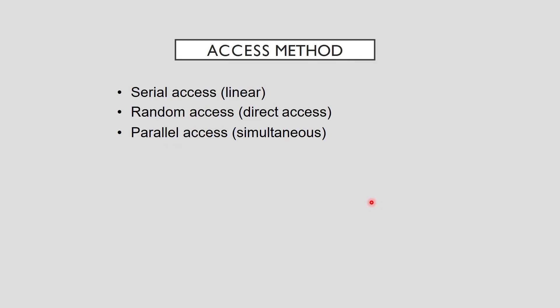The access method refers to the physical structure of the storage device's read or write mechanism and storage medium, which determines the ways in which data can be accessed. There are three broad classes of access: serial, random, and parallel access. A single device can use multiple access methods. Serial access storage stores and retrieves data items in a linear or sequential order. Magnetic tape is the only widely used form of serial access storage, where data is written in a specific order and can be read back only in that same order.